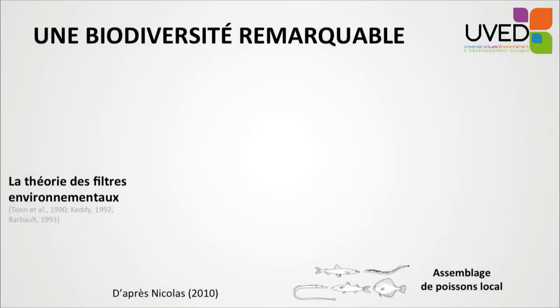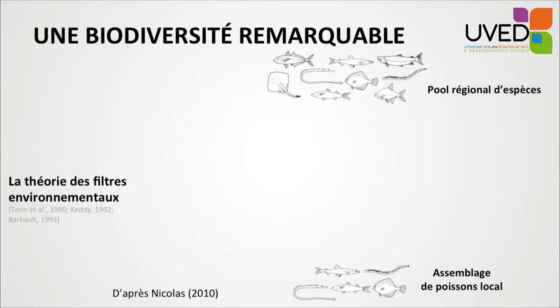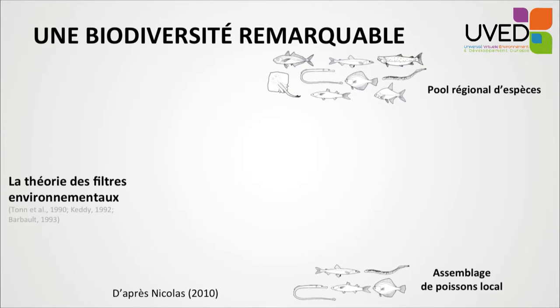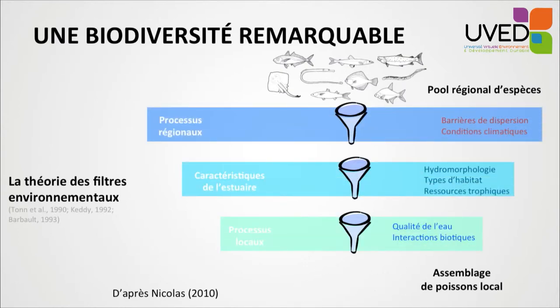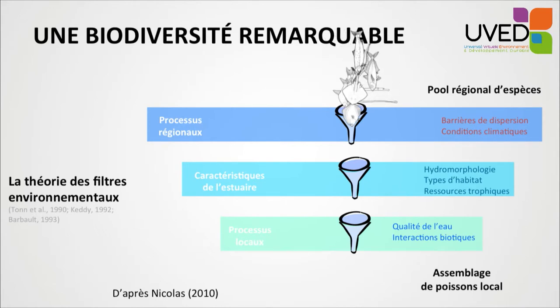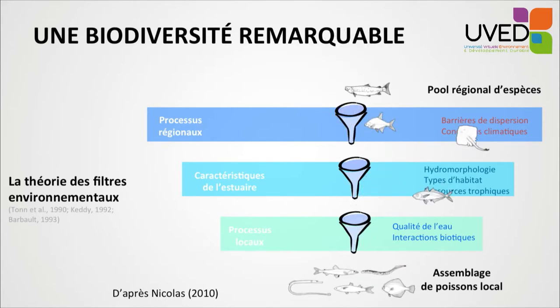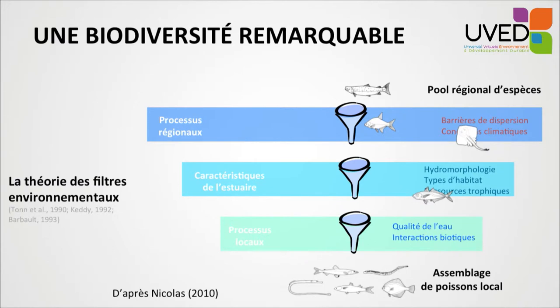If we take the example of fishes, the diversity observed locally — the number of species observed locally — comes from a regional pool of species that go through a number of filters, environmental sieves at different scales. On the regional level, there are dispersion barriers or climatic conditions. On the estuary level, it depends on the hydrology, morphology, types of habitats, and trophic resources available. And locally, the sieve depends on water quality and biotic interactions.